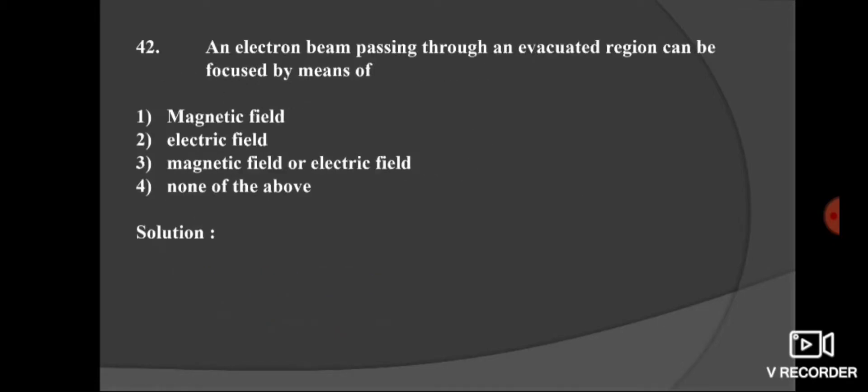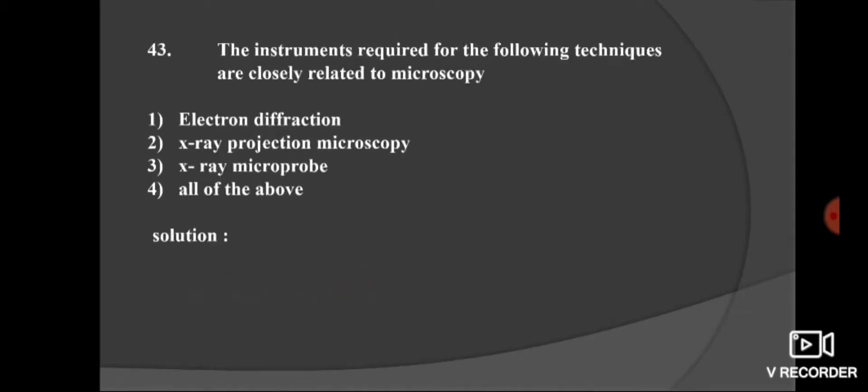Next question. An electron beam passing through an evacuated region can be focused by means of: option 1, magnetic field; option 2, electric field; third, magnetic and electric field; and none of above. We know that an electron beam passing through evacuated region can be focused by means of magnetic field and electric field. Option 3 is the right option.